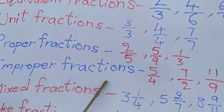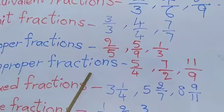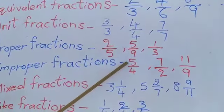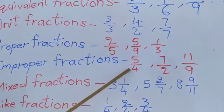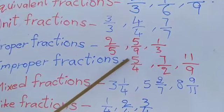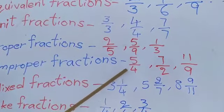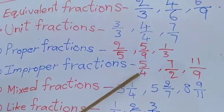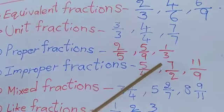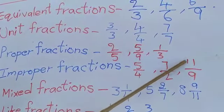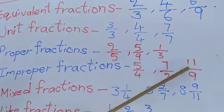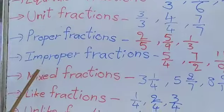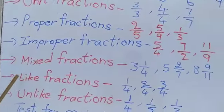Improper fractions means the numerator is greater than the denominator. For example, 5 is greater than 4, 7 is greater than 2, 11 is greater than 9. This type of fractions are improper fractions.